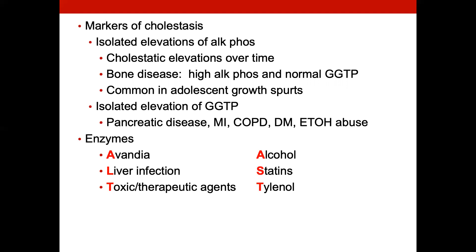If a patient has an isolated elevation of GGTP, that's when you want to think acute pancreatic process — pancreatitis or heart attack. That GGTP can be more useful in a specialty practice or hospital setting rather than a clinic, because if they're having symptoms of MI or pancreatic disease, that should be an acute process. You may pick this up in somebody with long-term COPD, diabetes, or alcoholism, where you should also see other elevations. The acronyms below summarize what we think about with ALT and AST: alcohol, statins, Tylenol, Avandia, liver infection, or toxic therapeutic agents.